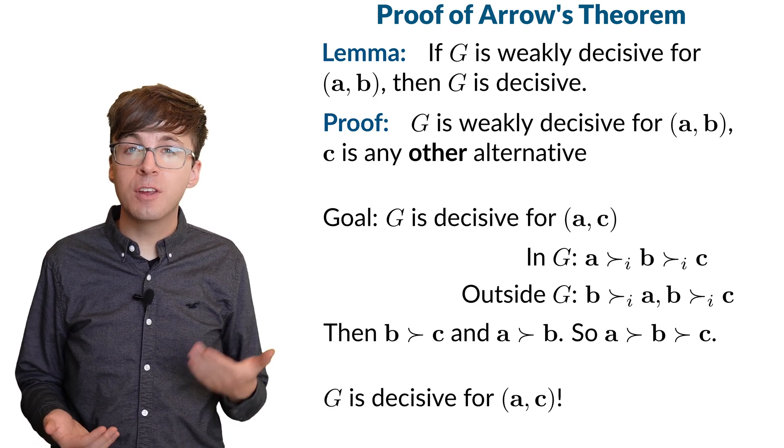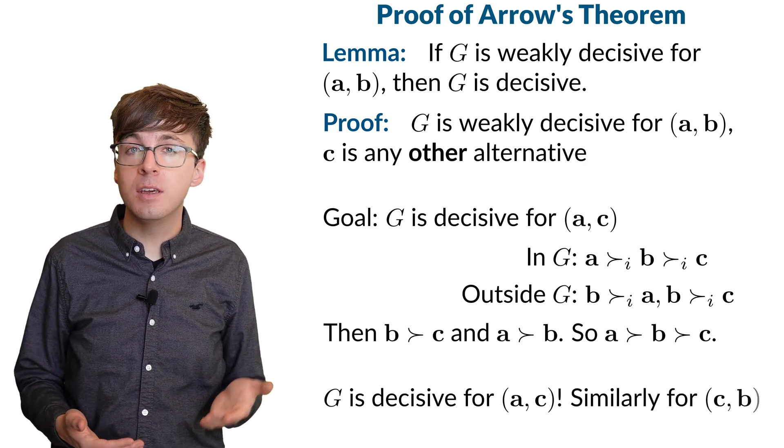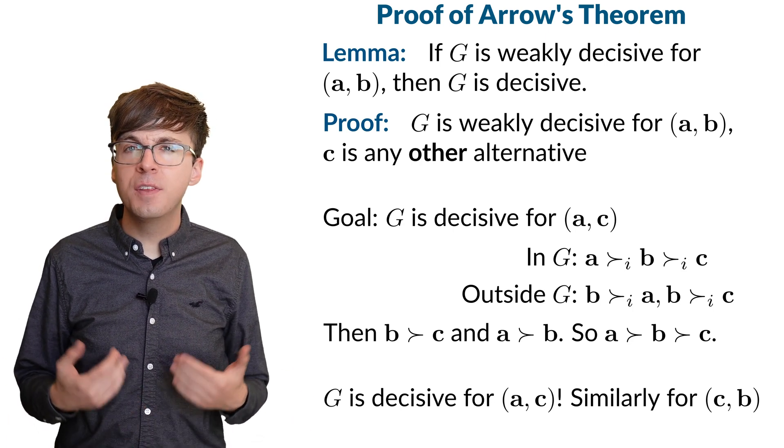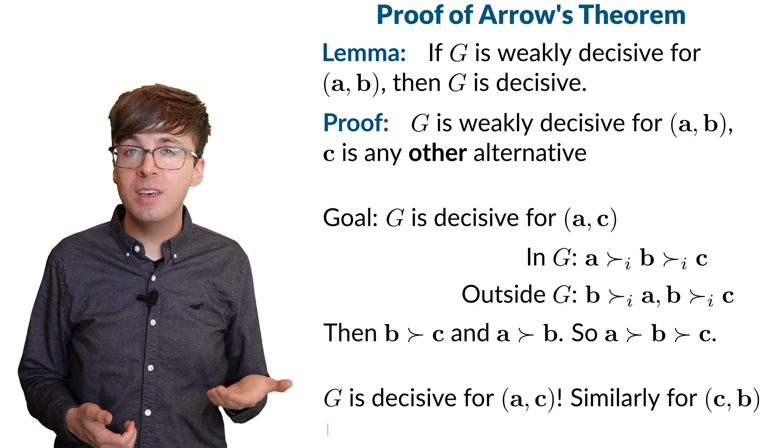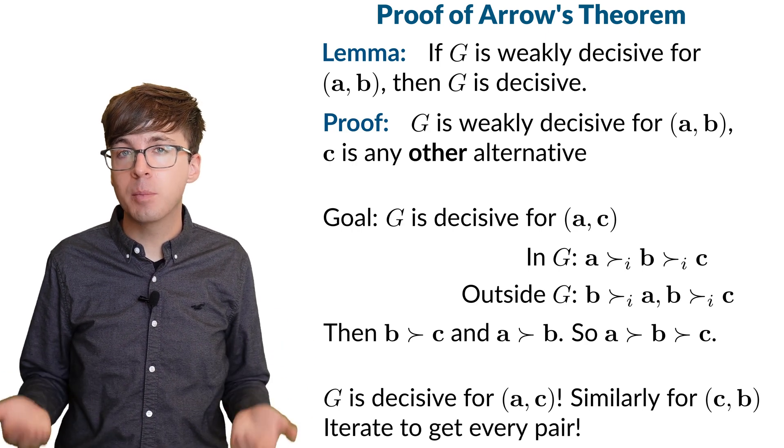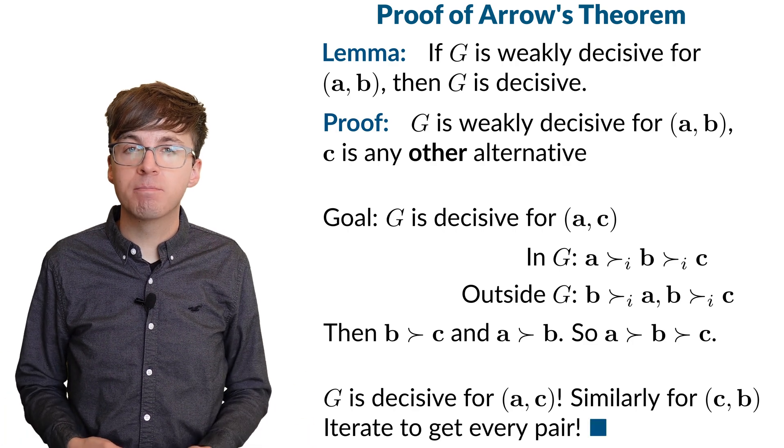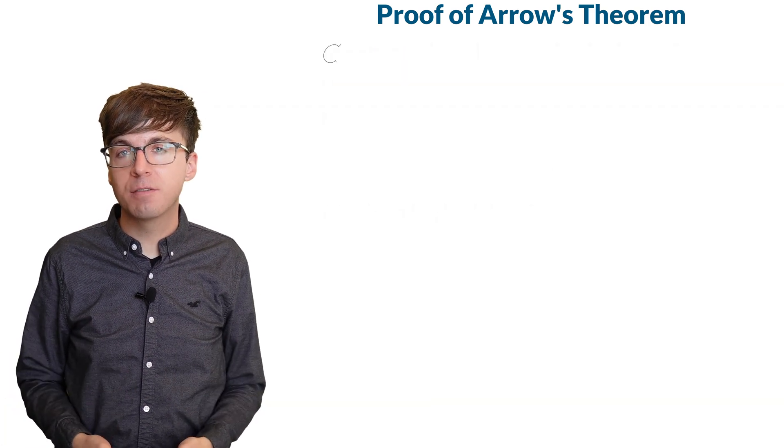We can repeat this proof to show that G is decisive for C over B. Since C was an arbitrary alternative, this same argument shows that G is decisive for any pair. This means that G is a decisive coalition. Now there's just one step left.